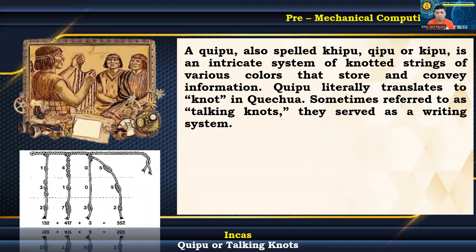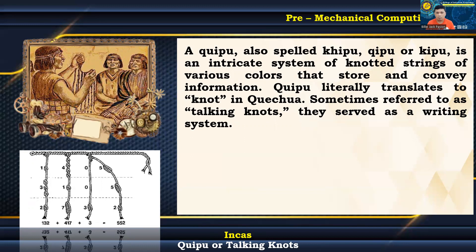A quipu is an intricate system of knotted strings of various colors used to store and convey information. Quipu literally translates to 'knot' in Quechua. Sometimes referred to as talking knots, they served as a writing system. Quipus were mainly used by the Incas as counting devices to keep track of numbers. Quipus function numerically like the decimal system, and consist of three kinds of knots: the single knot, the long knot, and the figure eight knot.